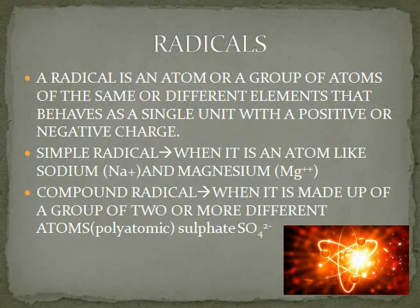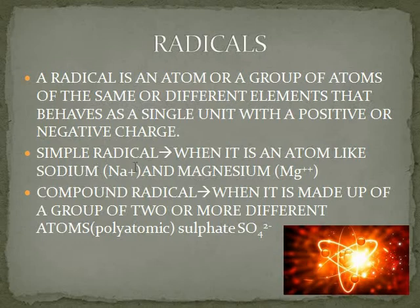Next, let's look at radicals. A radical is an atom or group of atoms of the same or different elements that behaves as a single unit with a positive or negative charge. Simple radicals are single atoms — like sodium with one charge, or magnesium which loses two electrons from its outermost orbit to become a 2+ cation. These are your simple radicals.